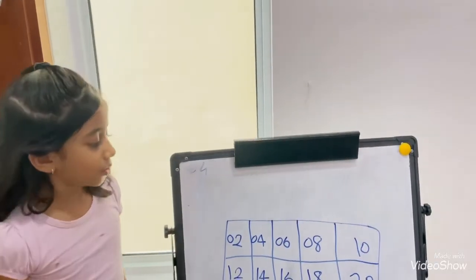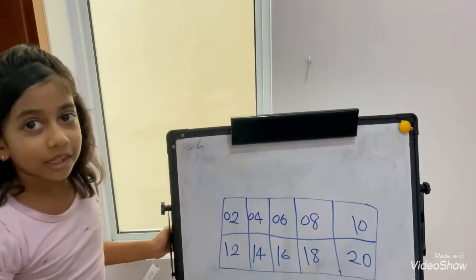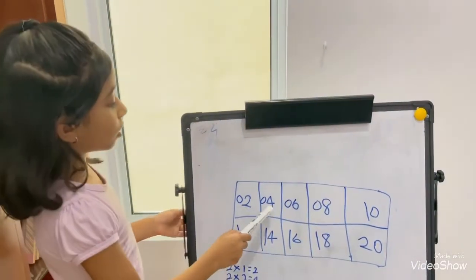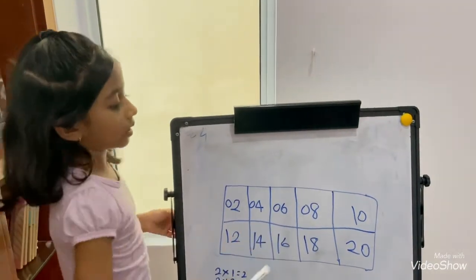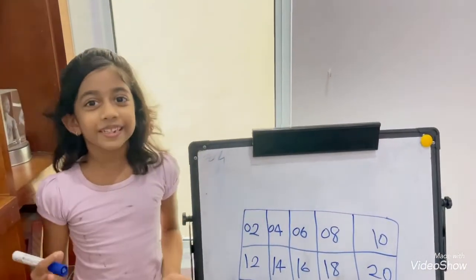For this 2 times table, you have to remember the secret number 2, 4, 6, 8. So, it will be so easy for you to do.